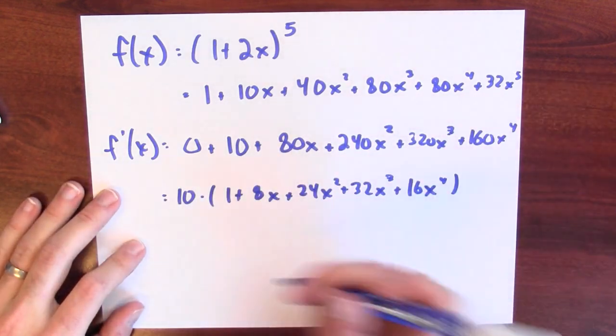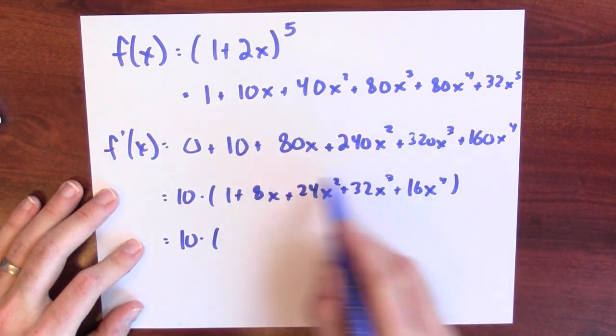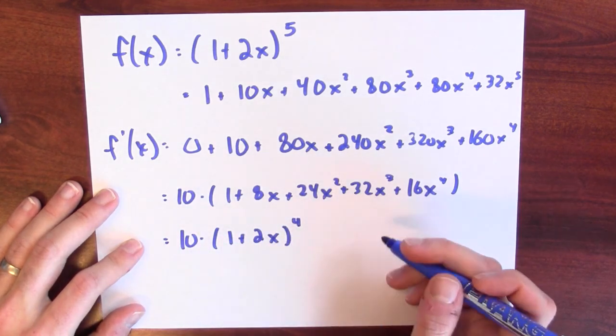What's way less obvious, I mean, not obvious at all, is that this mess also factors. It happens to be 1 plus 2x to the fourth power. This is not an accident. What if we instead applied the chain rule to the original problem?